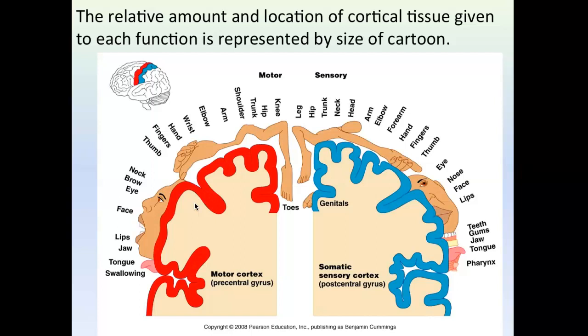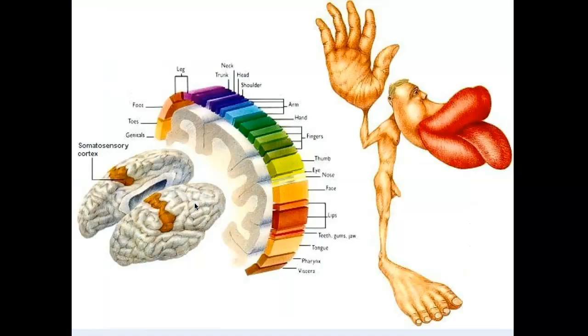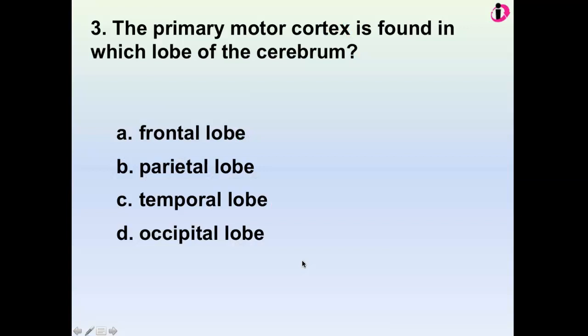If your brain depicted what you looked like, it would look like the homunculus — a figure with a very large face, lips, tongue, hands, and feet. So your body is not treated equally by your brain.